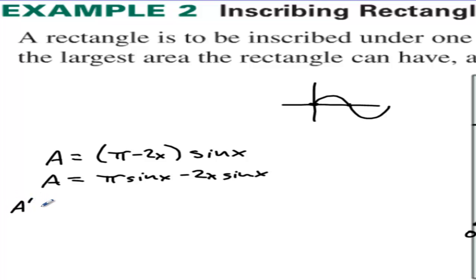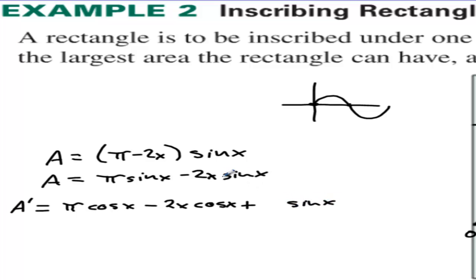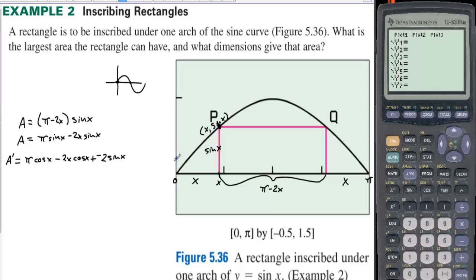The area equals pi·sin(x) minus 2x·sin(x). To maximize the area we take the derivative of the area: pi·cos(x) minus, using the product rule, first times derivative of second plus second times derivative of first, giving minus 2x·cos(x) minus 2·sin(x). We can't solve this with algebraic techniques, so let's solve this on the calculator.